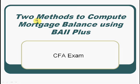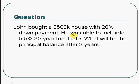This video shows you two methods to compute loan balance using the BA2 Plus calculator. This is the question: John bought a $500k house with a 20% down payment. He was able to lock into a 5.5% fixed rate for a 30-year loan. What will be the principal balance after 2 years?